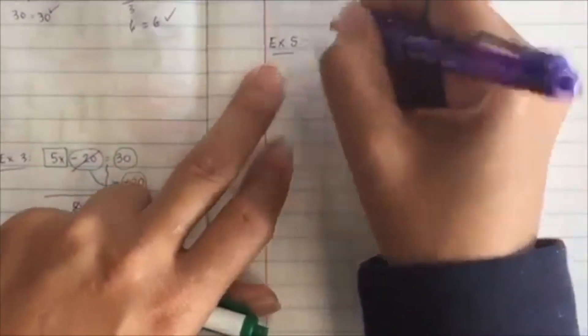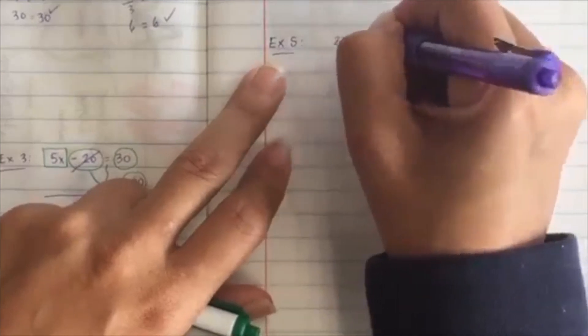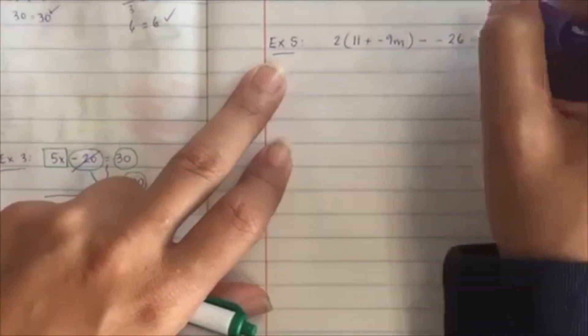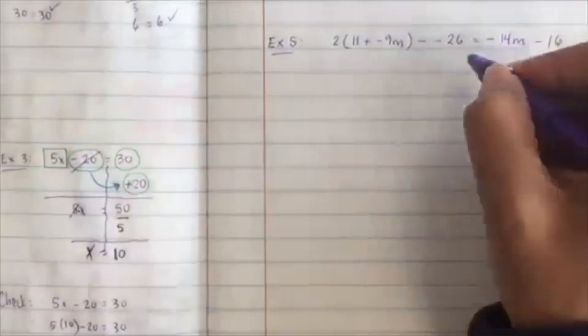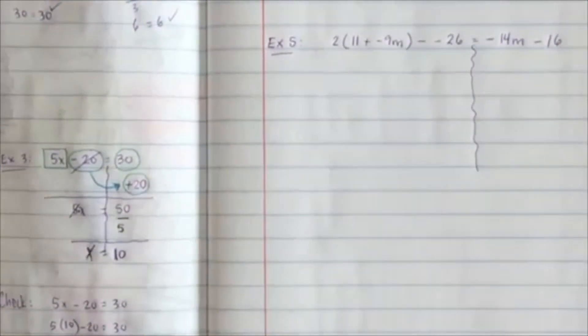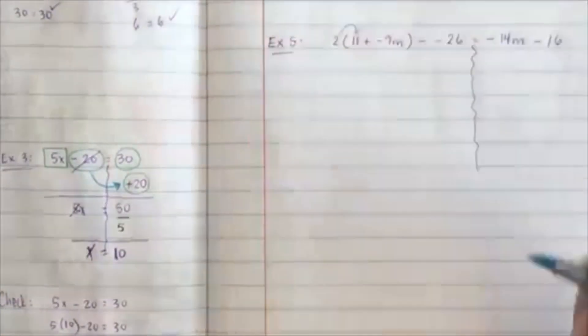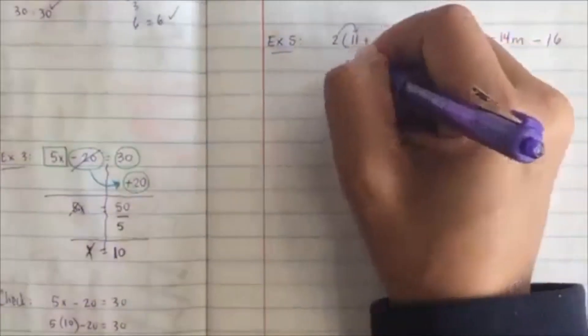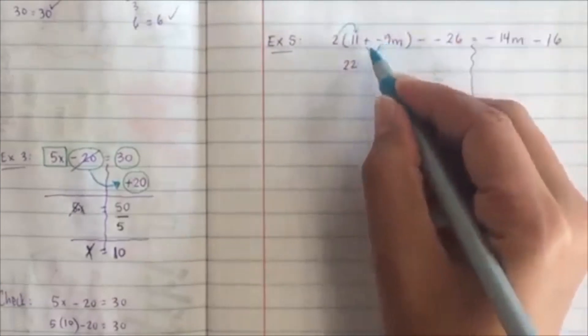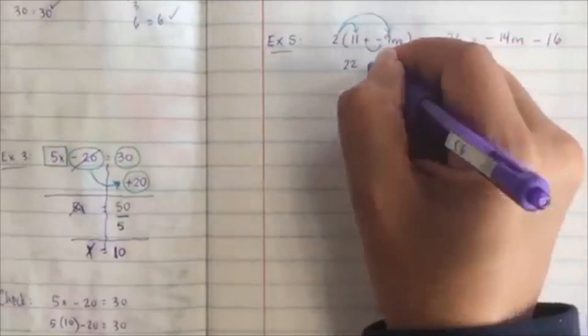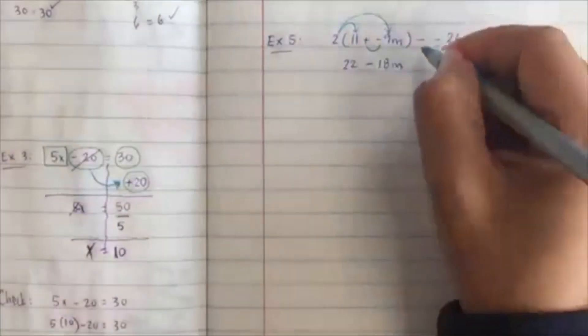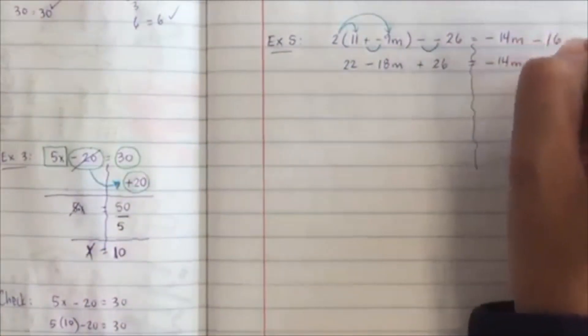Let's do one more example. 2 times the quantity 11 plus negative 9m, minus negative 26, equals negative 14m minus 16. Draw a river. Let's go ahead and get in the house as needed — so we're going to have 22. Remember when you have two signs, draw a smiley face. Good or bad? Bad — so that's going to be negative 18m. Draw a smiley face again — good or bad? Good — that's going to be positive 26. And the other side stays the same.